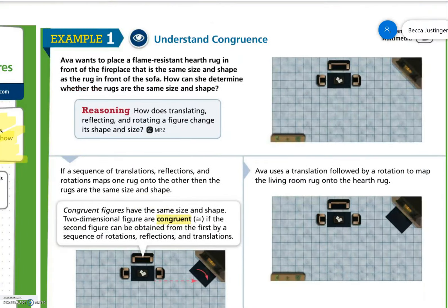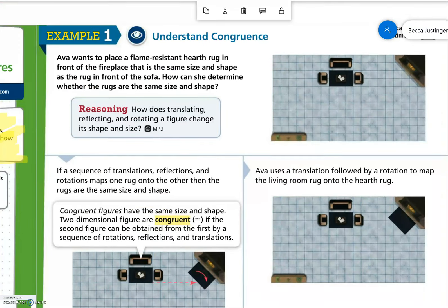Okay, example number one. Understand congruence. Ava wants to place a flame-resistant hearth rug in front of the fireplace that is the same size and shape as the rug in front of the sofa. How can she determine whether the rugs are the same size and shape? If a sequence of translations, reflections, and rotations maps one rug onto the other, then the rugs are the same size and shape. Congruent figures have the same size and shape. So that's one of your vocab words.